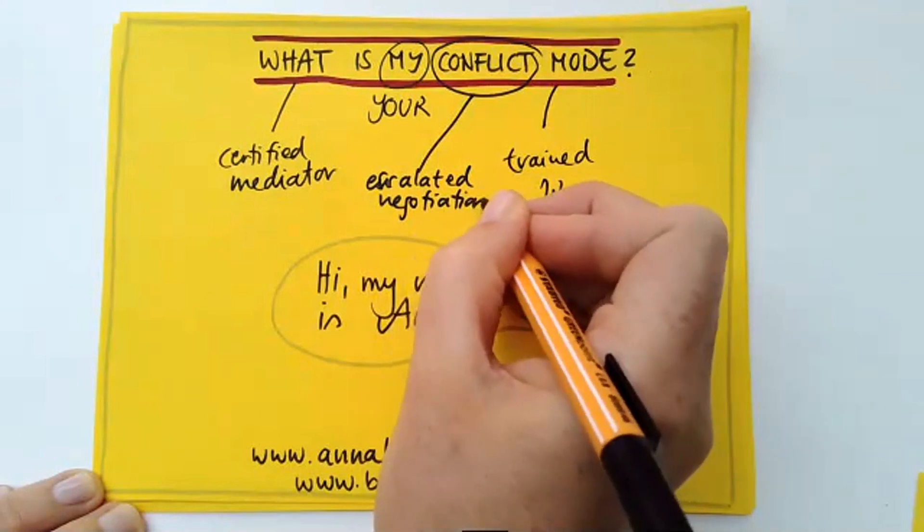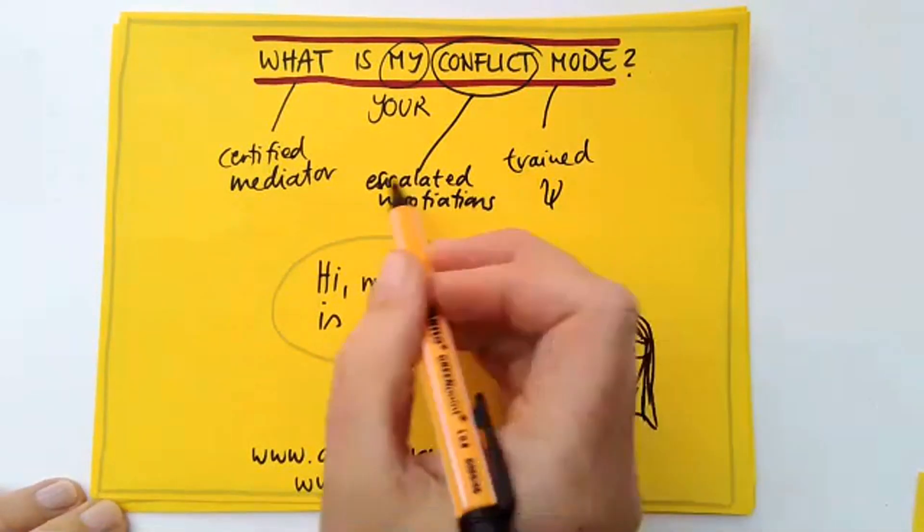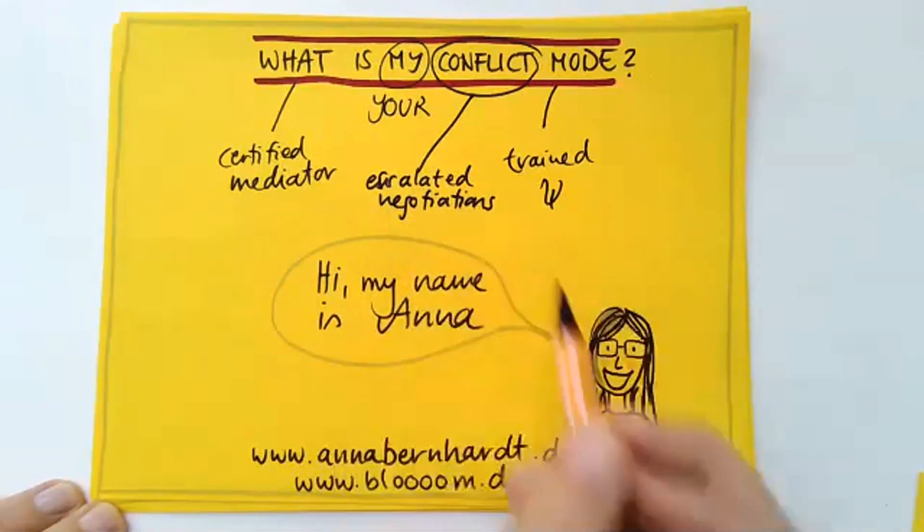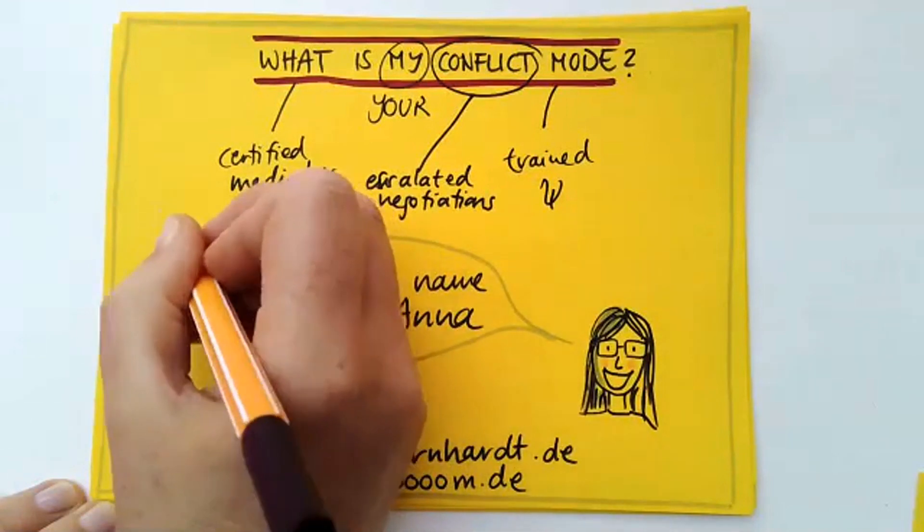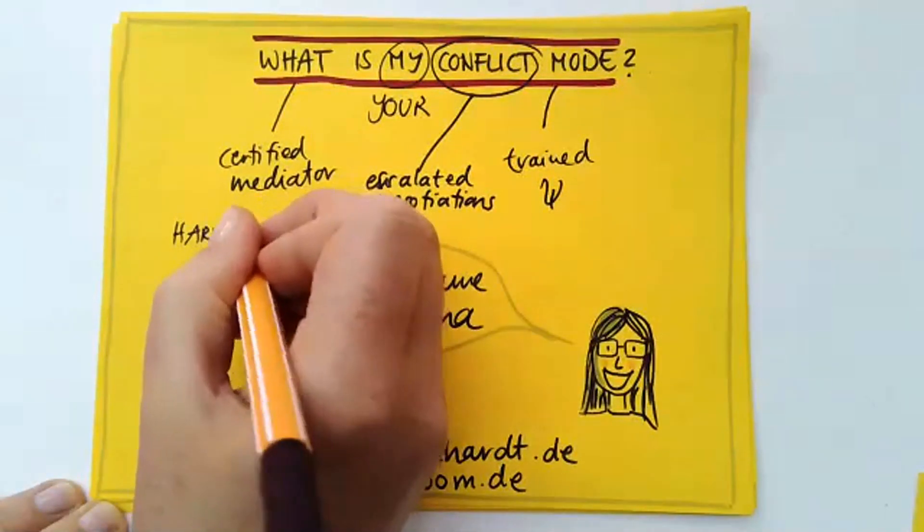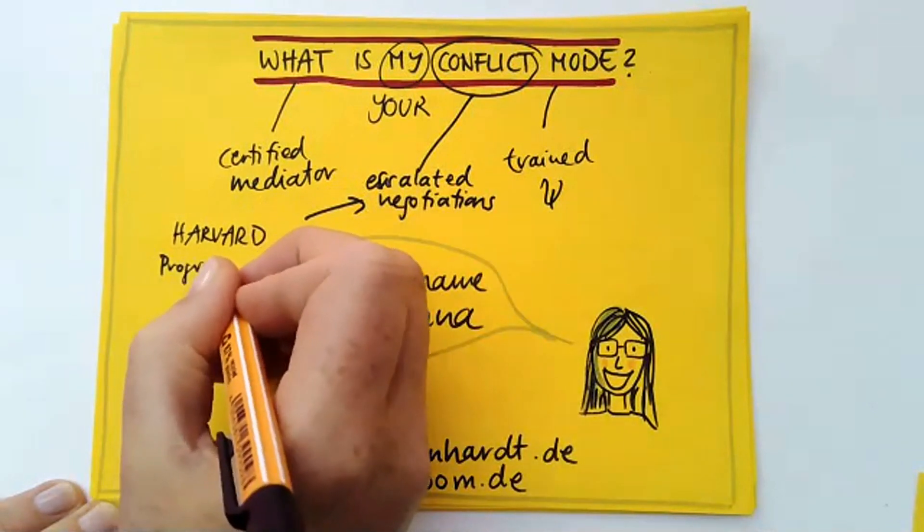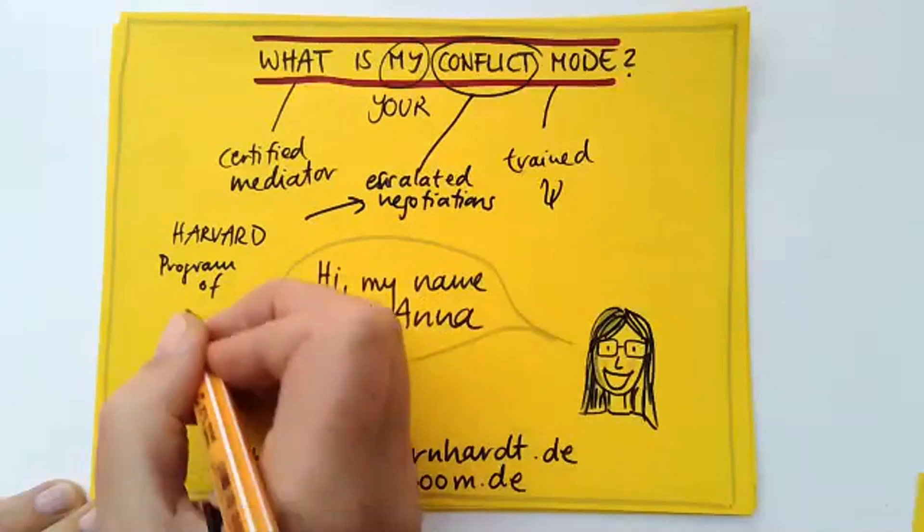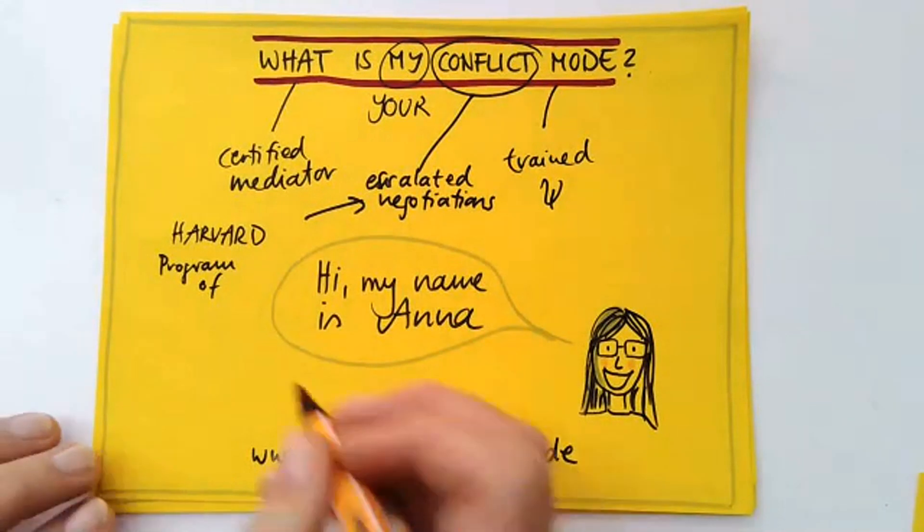So whenever we try to reach a goal, and we are depending on somebody else to consent, and opposing or seemingly opposing interests are in place, this is something I would call a negotiation. And I was trained in a certain approach called the Harvard negotiation approach. Maybe some of you are familiar with that. So these are the sources I'd like to put into these 20 minutes and to provide you with some information I find very helpful.